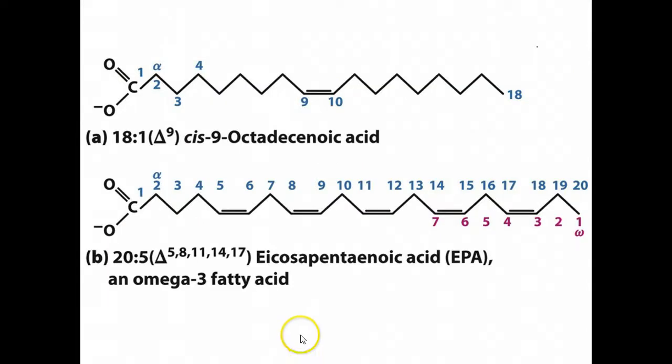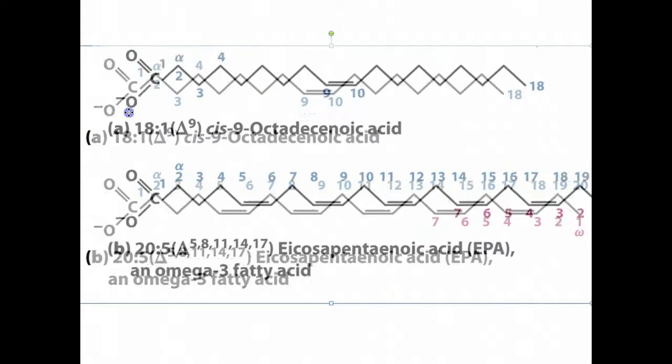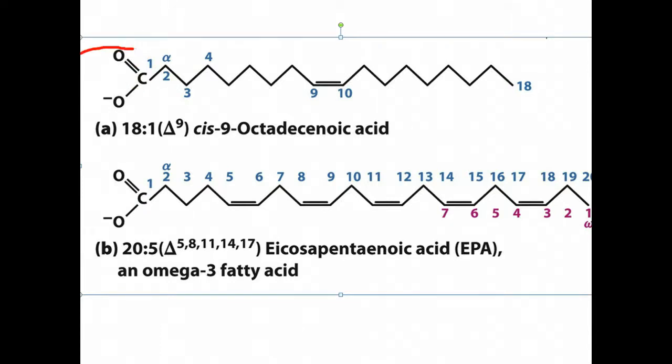The nomenclature for these acyl chains is based primarily on their length and degree of saturation. Acyl chains can either be saturated if they have no double bonds, monounsaturated with one double bond, or polyunsaturated with multiple double bonds. We can count from two different ends. If we're counting from the carboxyl end, that gives us the delta nomenclature.